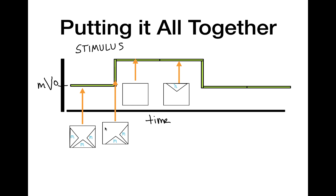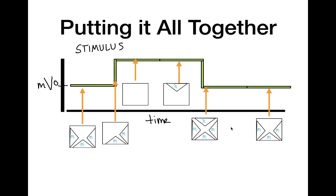As we keep the depolarization going, late into the depolarization the H-gate will close — because, remember, the H-gate closes in response to depolarization, but it does so very slowly. When we take the stimulus off, the M-gates rapidly close, causing the channel to be both closed and inactive. Then, several seconds after we remove the stimulus, the H-gates open back up again slowly in response to the return to hyperpolarization.